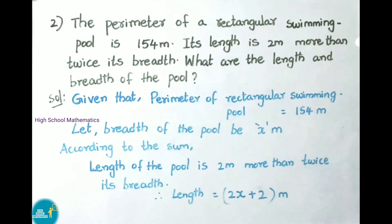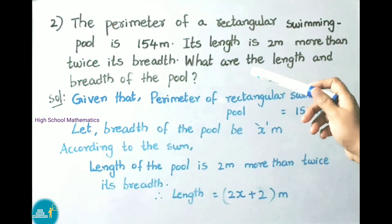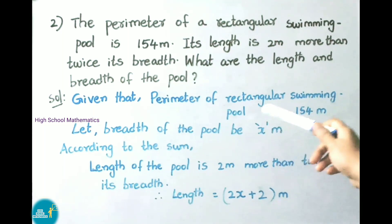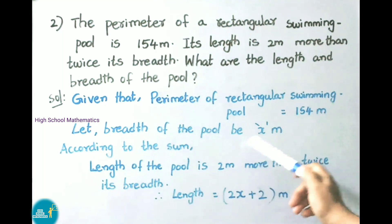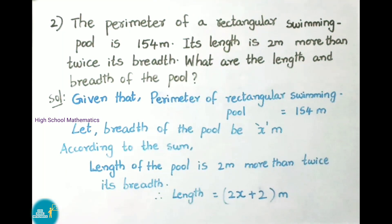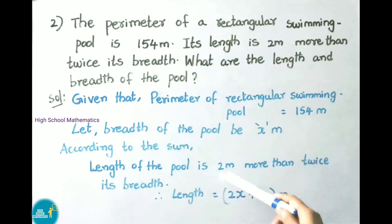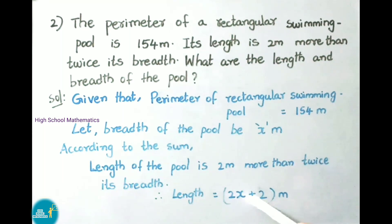See now question number 2. The perimeter of a rectangular swimming pool is 154 meters. Its length is 2 meters more than twice its breadth. What are the length and breadth of the pool? Let the breadth of the pool be x meters. Then length equals twice the breadth plus 2, so length equals 2x plus 2 meters.